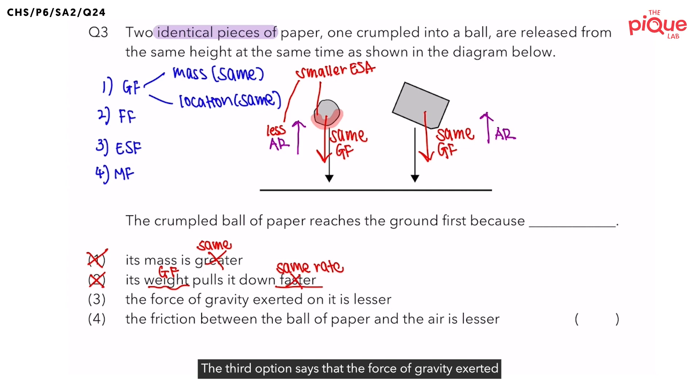The third option says that the force of gravity exerted on it is lesser. Force of gravity is also referring to gravitational force. And we say that gravitational force acting on both papers are the same. The last option states that the friction between the ball of paper and the air is lesser. Friction between the ball of paper and the air is referring to air resistance. Is the air resistance acting on the crumpled ball of paper lesser? Yes! Hence, the answer to this question is number 4.